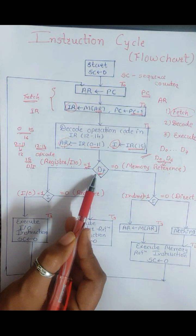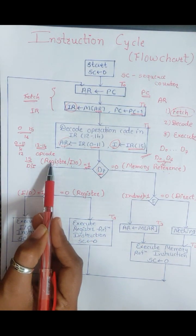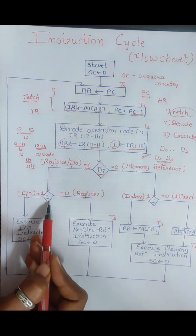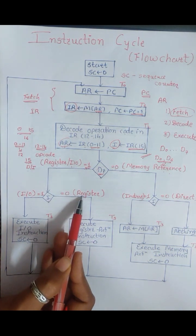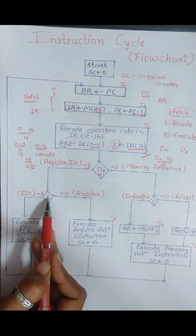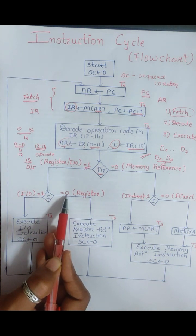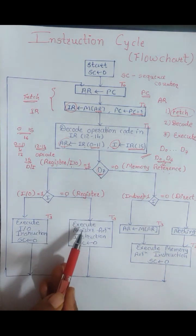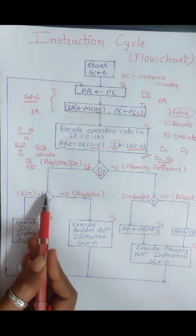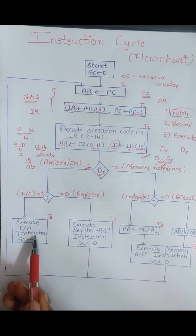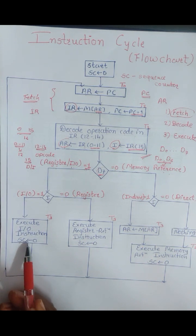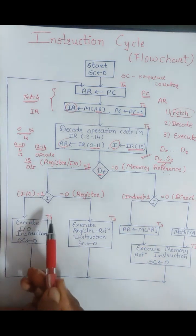Now, if D7 is 1, that means either we have a register reference instruction or an input/output instruction. Then again we check I. If I equals 0, it's a register reference instruction, and we execute it at the T3 timing signal. If I equals 1, it's an input/output instruction, and we execute that at T3 as well. At the end, we reset the sequence counter back to 0.